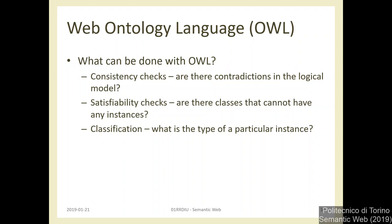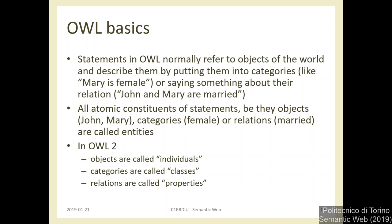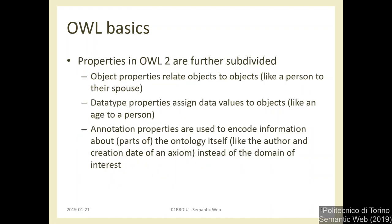That is why we can use this for querying information and for completing the information that we know. For terminology: in OWL we use 'individual' instead of 'instance' for an element of a class, and 'property' instead of 'relation,' but these are just terminology differences.